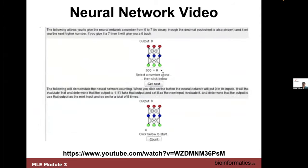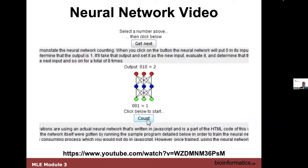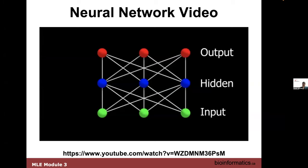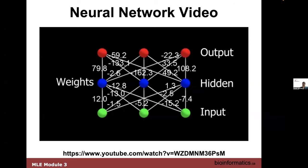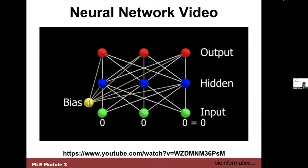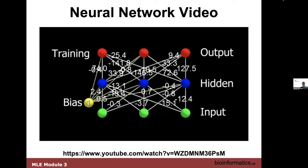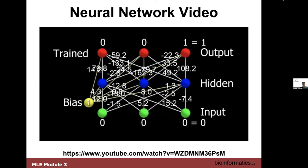The network has been embedded into a web page. Each connection has a number associated with it called a weight, and there's also a bias unit connected to the hidden and output units with its own weights. To get the neural network to produce outputs, you take the input values, do math with all these numbers, and if all those numbers are just right, it spits out the outputs you want — for all possible inputs simultaneously. Training a neural network involves adjusting all those weights such that given an input, it produces the correct output.